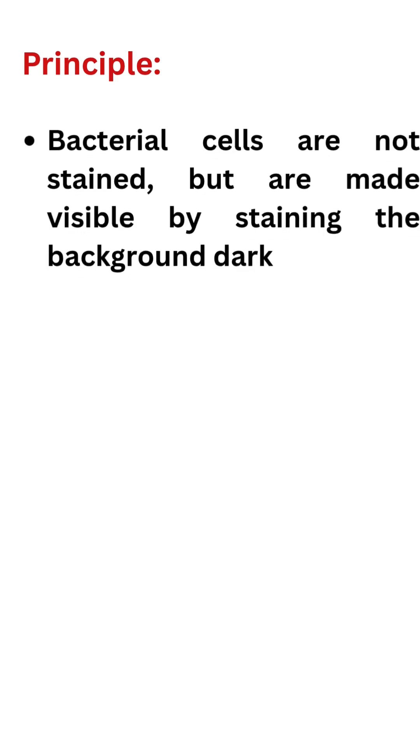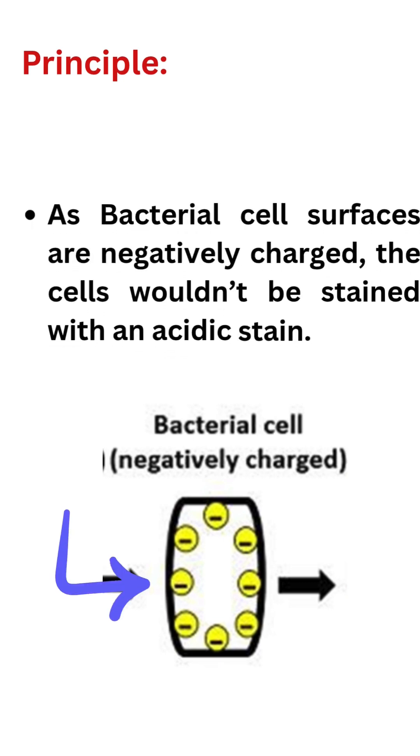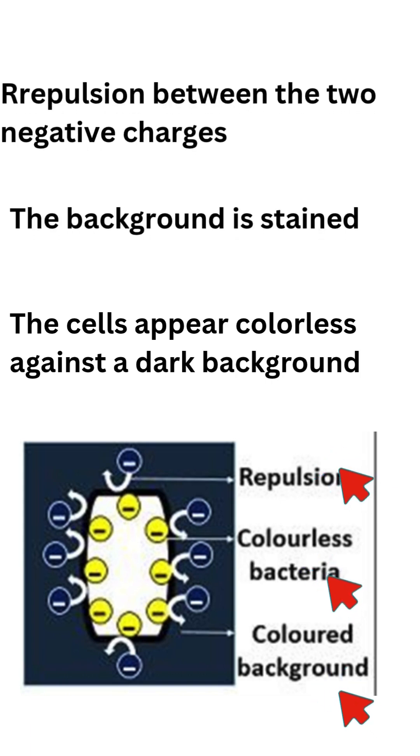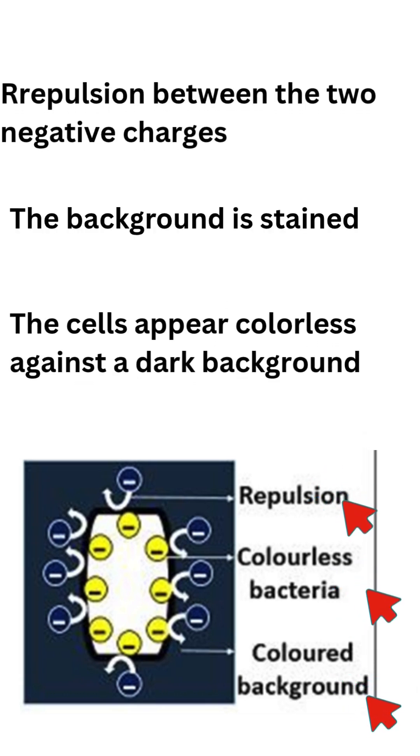Principle: Bacterial cells are not stained, but are made visible by staining the background. As bacterial cell surfaces are negatively charged, the cells wouldn't be stained with an acidic stain. This is because of the repulsion between the two negative charges. Instead, the background is stained. As a result, the cells appear colorless against a dark background.